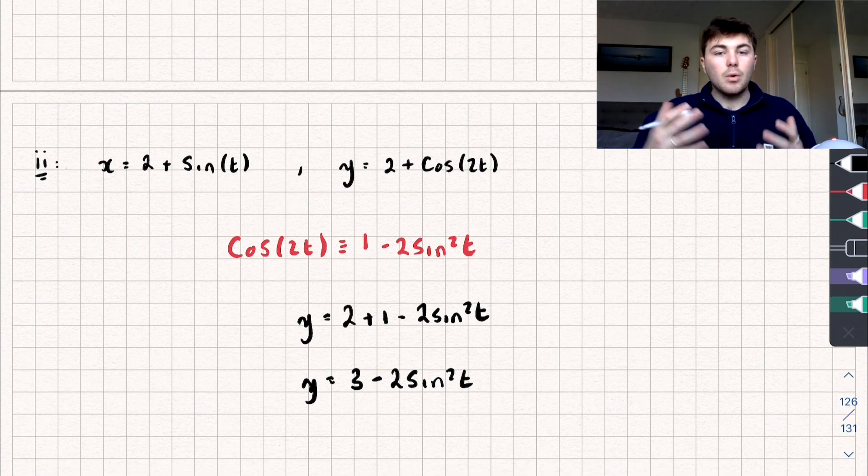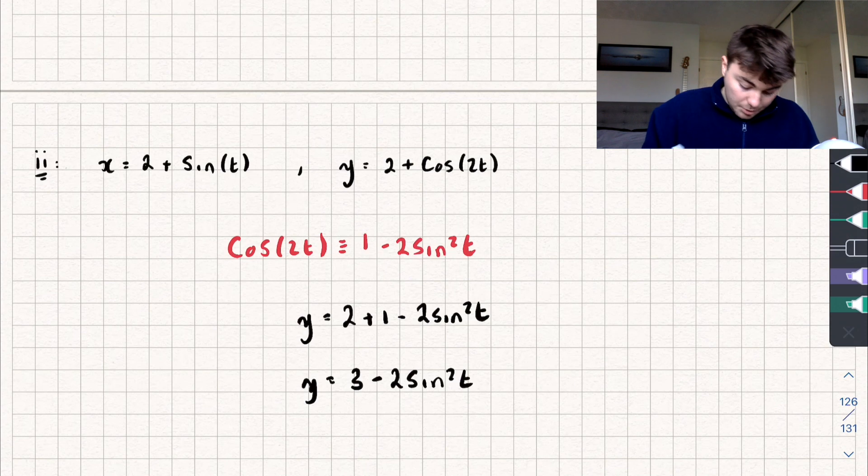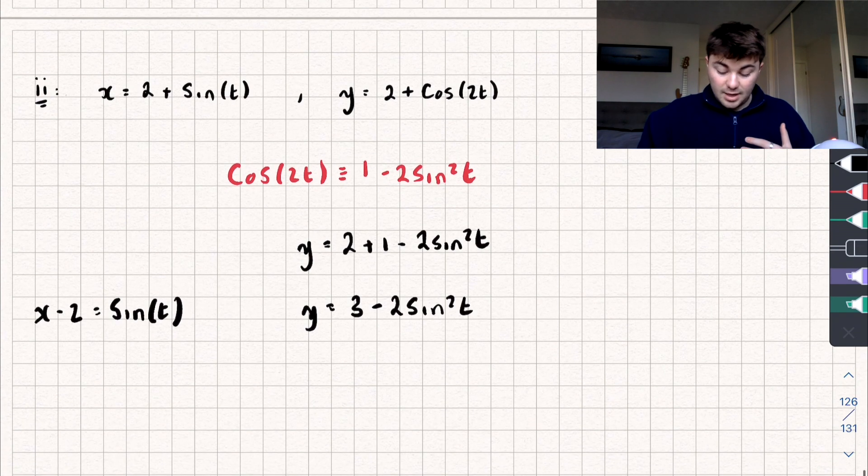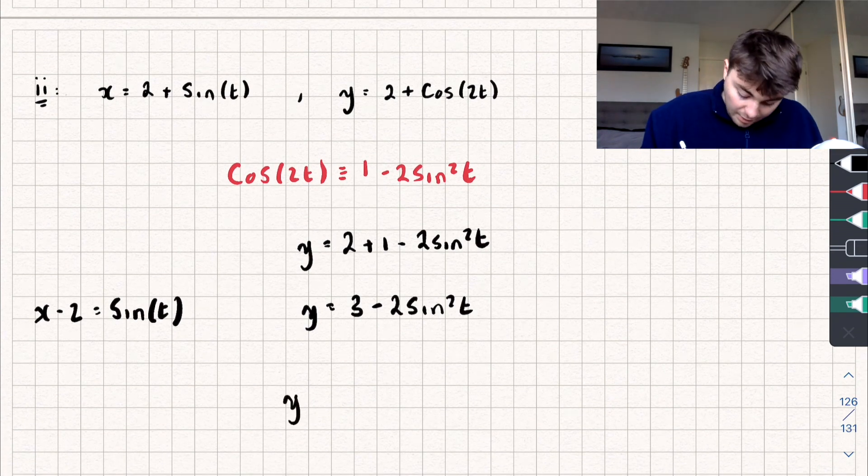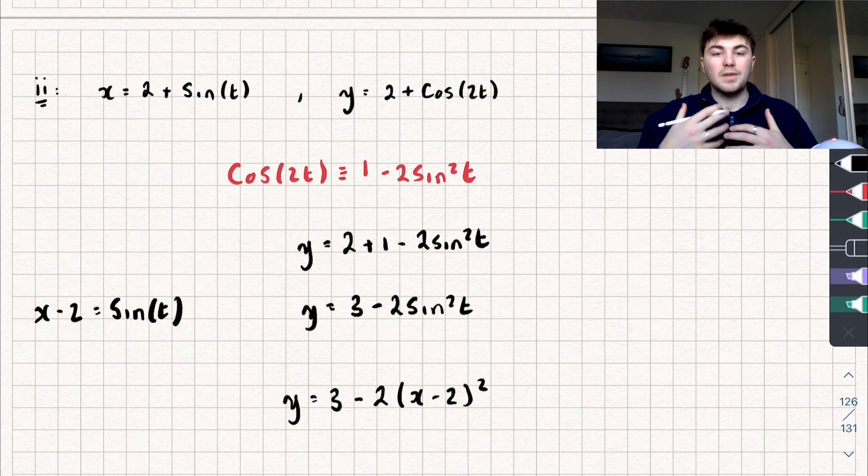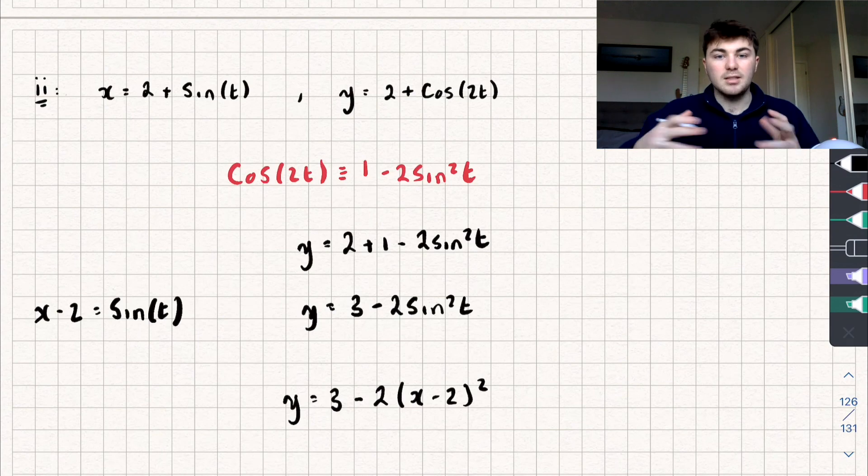Now, if we've rearranged our equation for x to make sine of t the subject, we get that x subtract 2 is equal to sine of t. And now we can substitute sine of t into our equation for y. And we get now y is equal to 3 subtract 2 lots of x subtract 2 all squared. And you can see we've now written it into our Cartesian equation form. So again, it's not that difficult. You just need to maybe use some trig identities that you know.